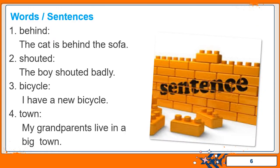Let's start the word sentences. Four words from the unit Mr. Plot are given here. You are supposed to use these words in sentences. I have made sample sentences for you but you are encouraged to make other sentences of these words. I am reading these word sentences for you. First one is 'behind'. Behind means at the back. The cat is behind the sofa.